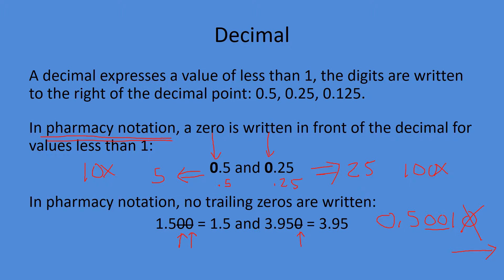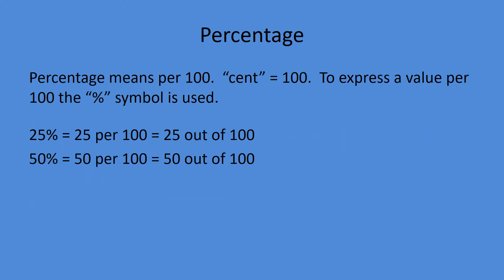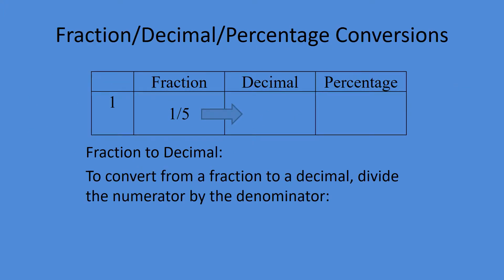Percentage: cent means a hundred, so technically a percentage is turning every single fraction into a fraction over a hundred. Since percent means per 100, if you have 25%, that's 25 per 100, and if you have 50%, that's 50 per 100. You can see where the fraction comes from: 25 over 100, 50 over 100.